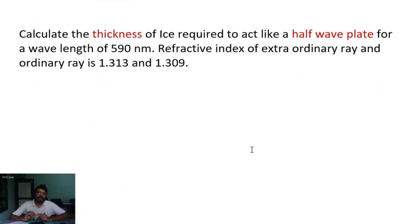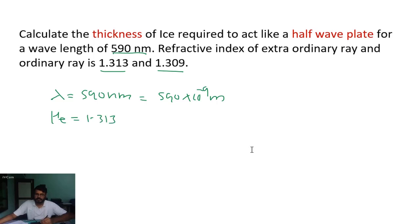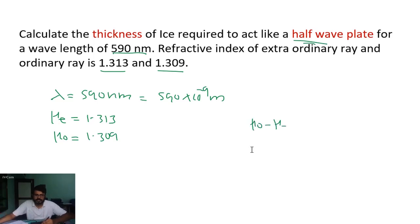Next question: calculate the thickness of ice required to act like a half wave plate for a wavelength of 590 nanometers. The refractive index of the extraordinary ray is 1.313 and of the ordinary ray is 1.309. So λ equals 590 times 10 to the minus 9 meters, μe equals 1.313, and μo equals 1.309. For a half wave plate, the condition is: (μe minus μo) times thickness equals lambda divided by 2.